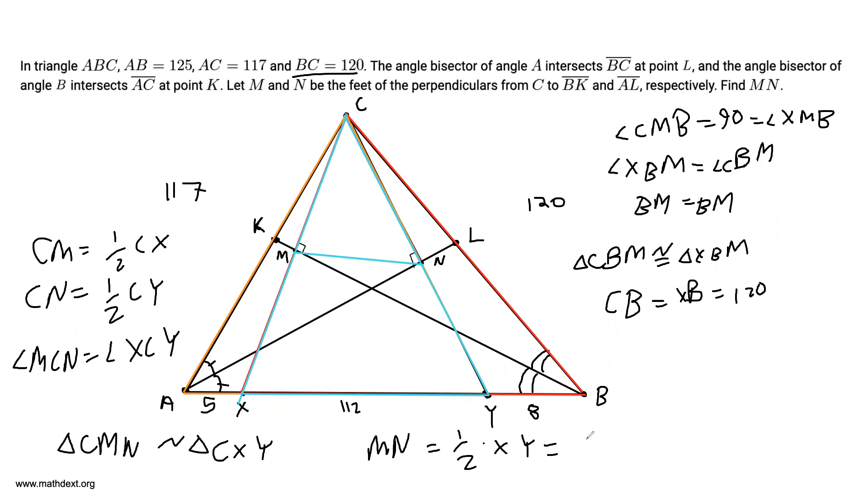And half of 112 is 56. So MN is equal to 56, and we are done.